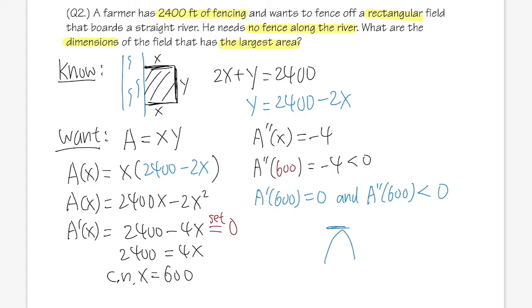That being done, let's go ahead and find out the y, which is 2400 minus 2x. And that means that's 2400 minus 2 times 600. Work that out, you will get 1200.